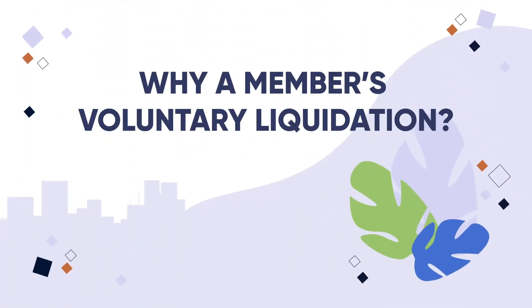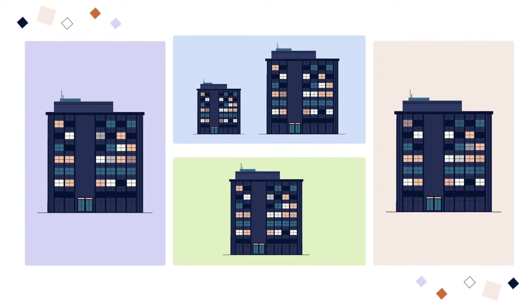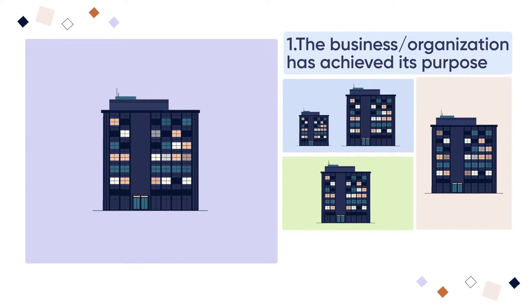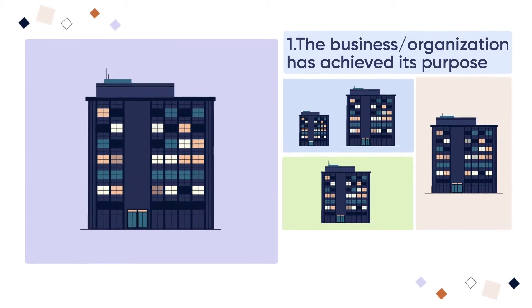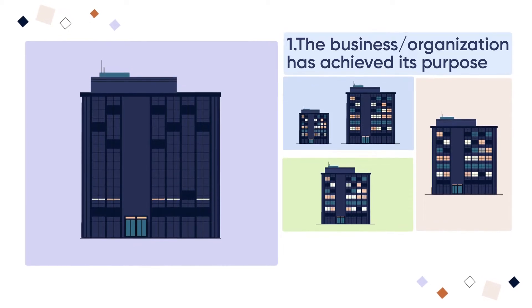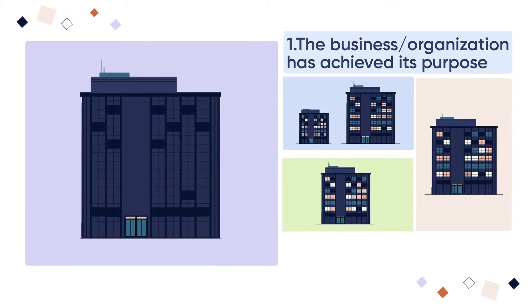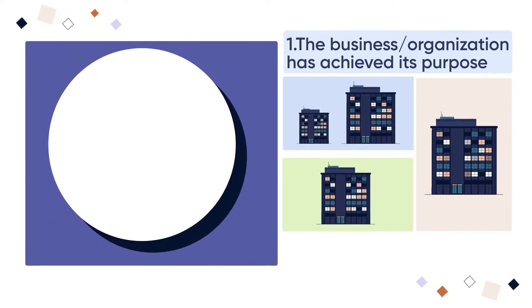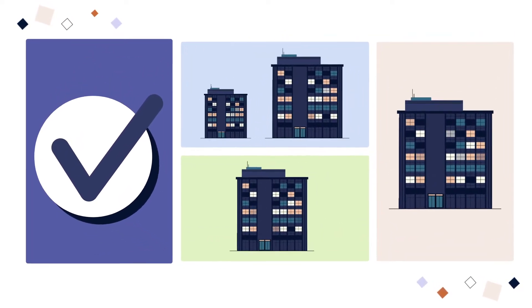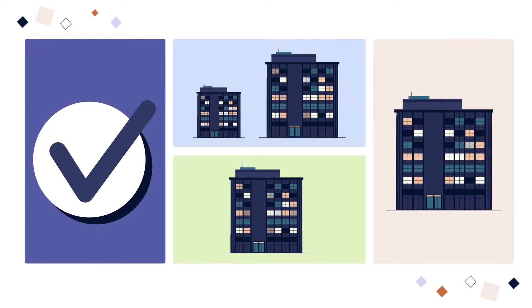Why a member's voluntary liquidation? There are several reasons why a company may enter a member's voluntary liquidation process. First, the business or organization has achieved its purpose and the company is no longer required to conduct business or exist. This is common where a business is no longer viable and there is little opportunity for it to continue successfully. It may have also been set up to deliver a charitable charter that has achieved its purpose and is therefore no longer required to exist.